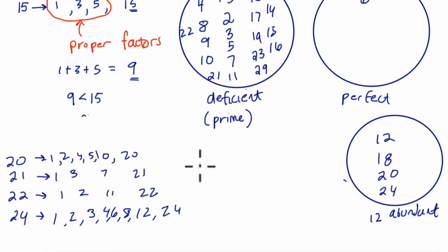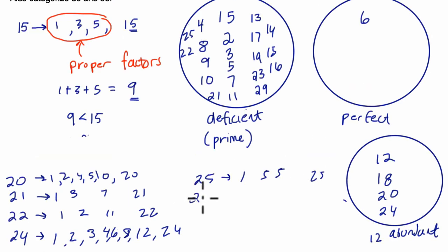And 25. Let's do 25. So 25 is 1 times 25, and 5 times 5. Now let's look at 26. So we have 1 and 26. Now let's look at 26. So for 26, we have 1 times 26, 2 times 13, and I think that's it. So we have 13 plus 2 plus 1 is 16, and that's less than 26. It goes here.